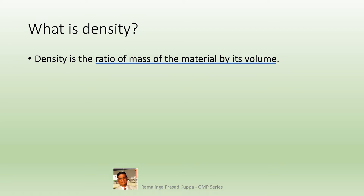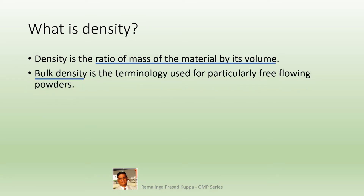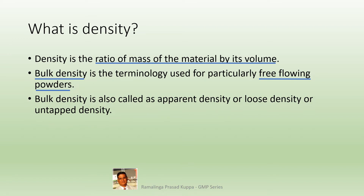There are two parameters: weight and volume. Bulk density is the terminology used particularly for free-flowing powders and is mostly used for APIs and for granulations. The principle is the same in both cases. Bulk density is also called apparent density, loose density, or untapped density. Since the density is measured for loose or untapped powders, these names are apt.